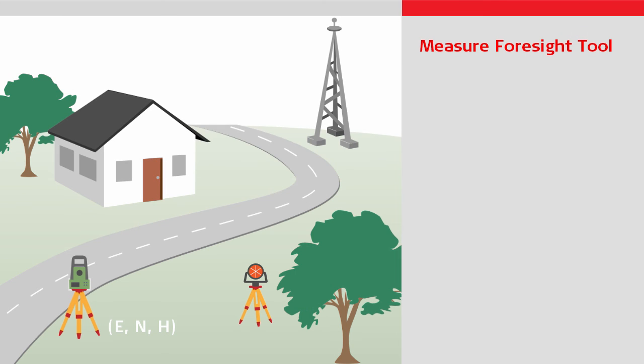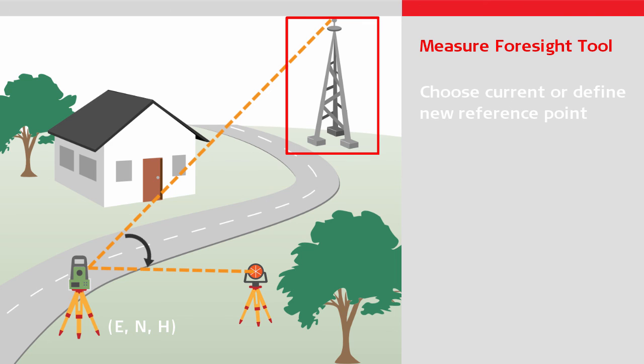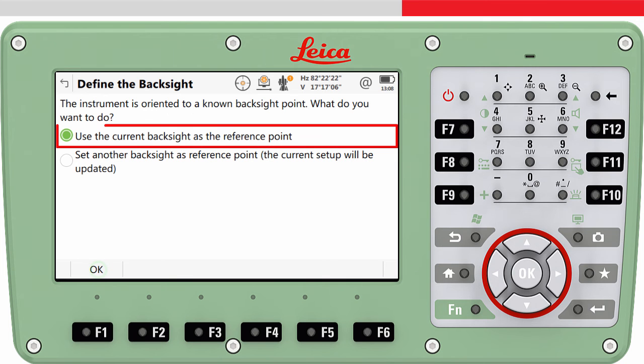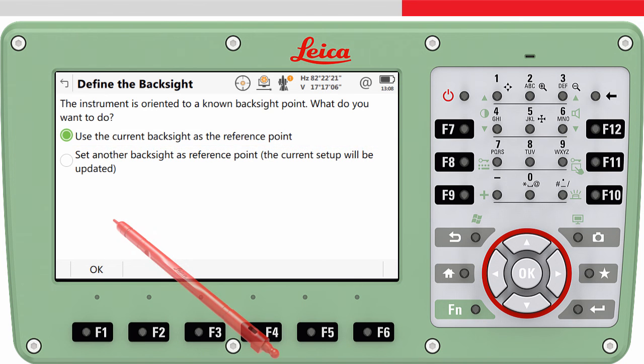This allows you to define if the current backsite should be used as the reference point, or if it is needed to define a new reference point. The reference point is the point from which angles will be turned when measuring to the new foresight point. We will choose to use the current backsite point as the reference point.